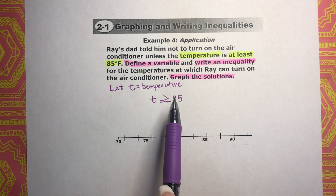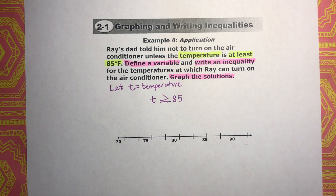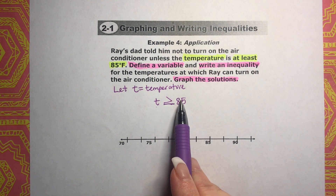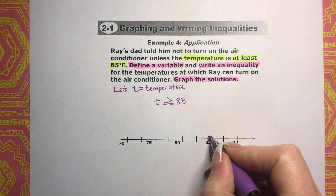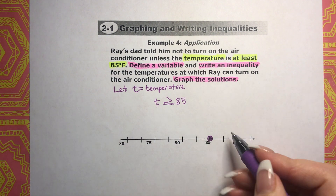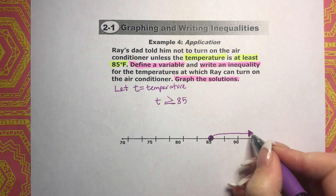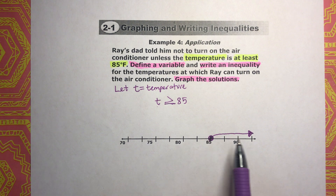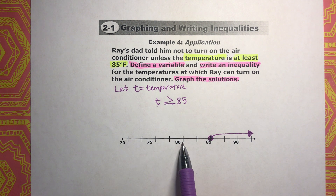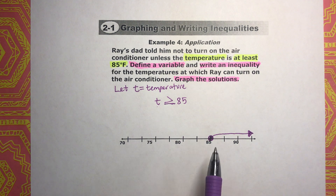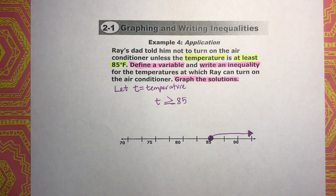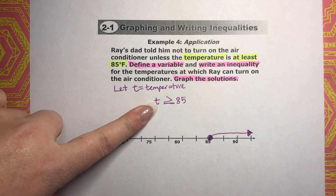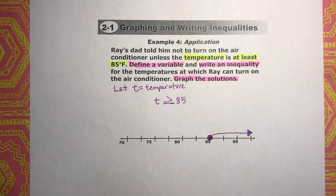Define a variable — done. Write an inequality — done. Then we just have to graph the solution. We go to 85 on the number line, and since it includes 85, I'm going to close in that circle. Then it's everything greater than 85, so the arrow goes this way. If the temperature is 85, 90, 95, or 100, you turn it on. If it's 80, 75, or 70 — anything less than 85 degrees — you don't turn it on. So these are the temperatures 85 and above at which you would turn on the air conditioner.